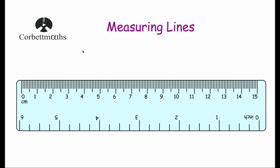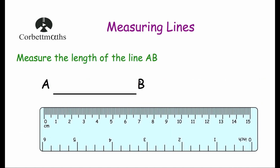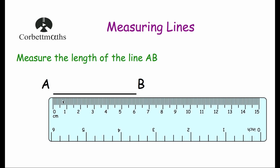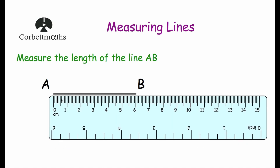Let's have a look at our first example. We've been asked to measure the length of the line AB — a horizontal line. We're going to take our ruler, make sure we've got centimetres at the top, and line up the zero with the beginning of the line. We then count up how many centimetres it is: 1, 2, 3, 4, 5, 6. As you can see, it's just 6 centimetres long.